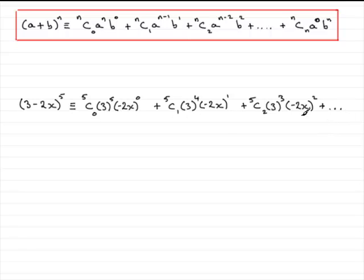So, all that's left to do is just to work this out. And any scientific calculator should have the function nCr on it. So, you should be able to work out 5C0, 5C1, and 5C2.